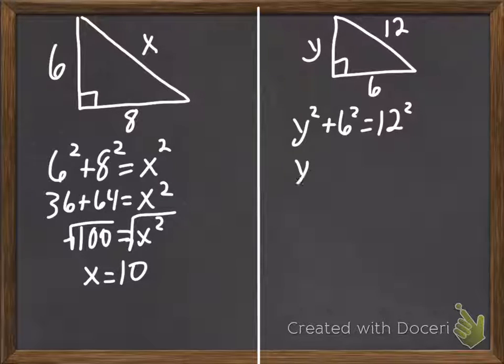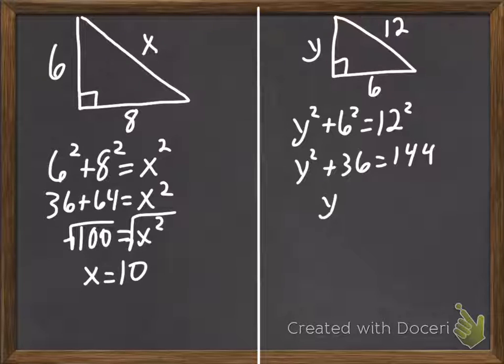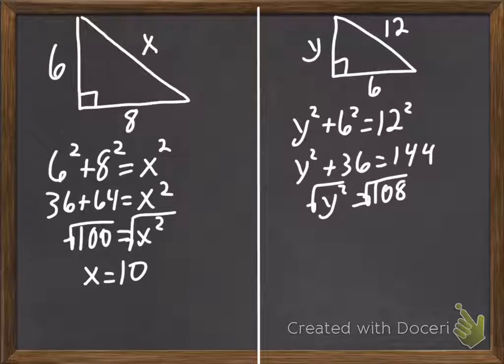So, y squared plus 36 equals 144. So, y squared equals 108. Take the square root. And it looks like we get to do some simplifying of that radical. Always, always, always simplify.